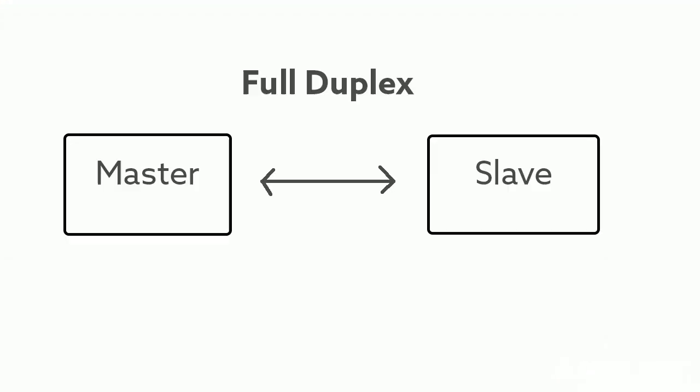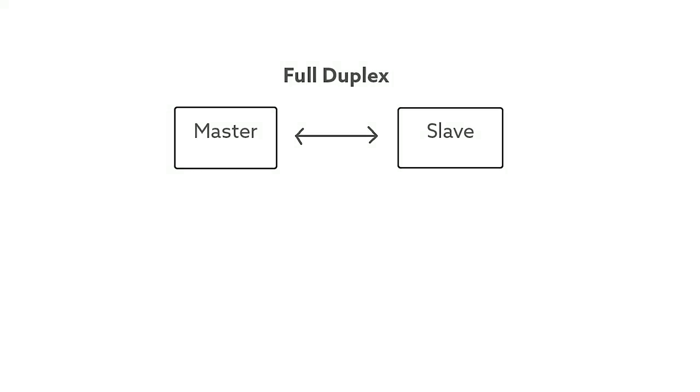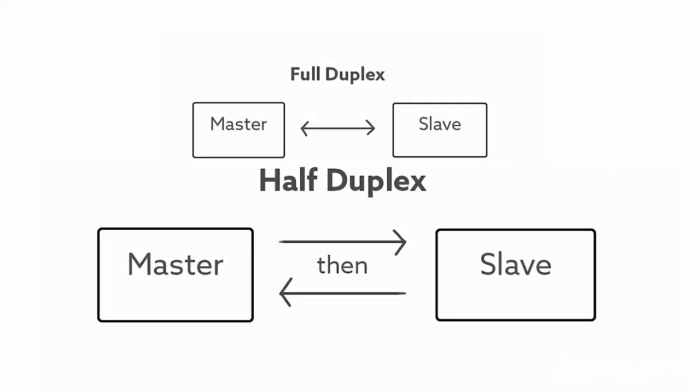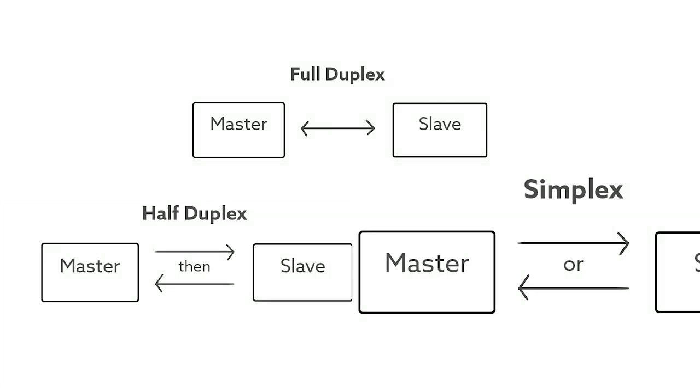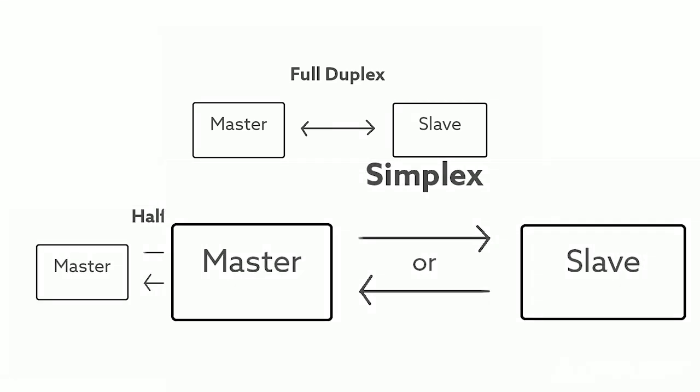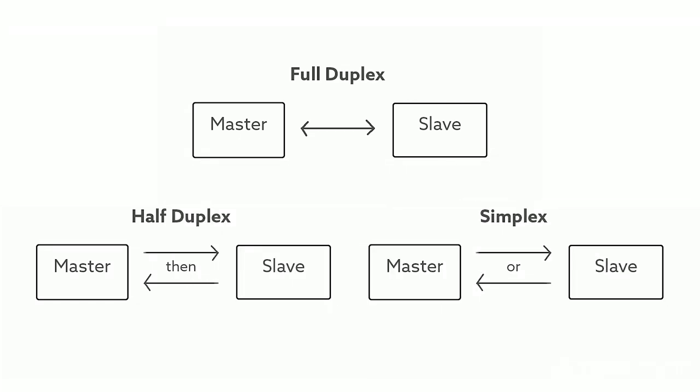UART can be configured to be in full duplex like SPI, or in half duplex mode where the two devices are only able to talk to each other one at a time, or in simplex mode where the data only goes in one direction. Because it's so configurable, both devices have to be configured exactly the same to ensure that data is received correctly on both ends. The transmitting device pulls the data line to a low voltage to issue a start condition, sends out five to nine bits of data at the set data rate, and once the expected bits have been transferred, the data line is brought back to a high voltage state as a stop condition terminating the communication session.